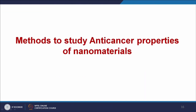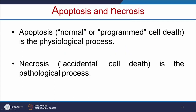Now let us see what are the various methods available to study the anticancer properties of nanomaterials. Before we study the anticancer properties, we have to understand two types of cell death: apoptosis and necrosis. Apoptosis is a normal or programmed cell death — a physiological process — and necrosis is an accidental cell death — a pathological process.